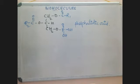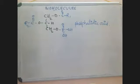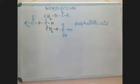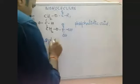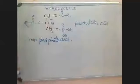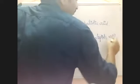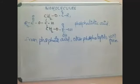Because of the binding of the extra phosphate group, this is called a phospholipid. And since it has a non-lipid part, it is called a compound lipid. This phosphatidic acid is the basic unit from which other phospholipids are formed.